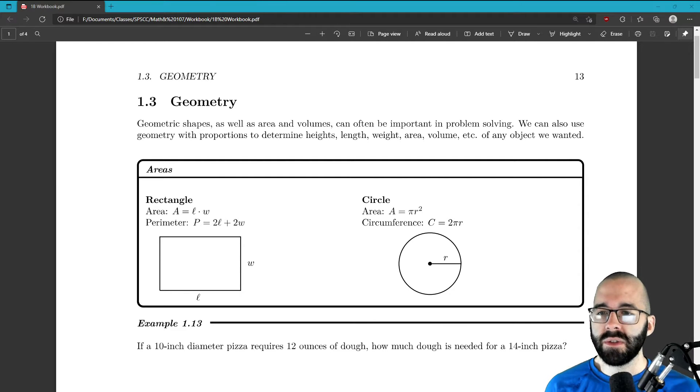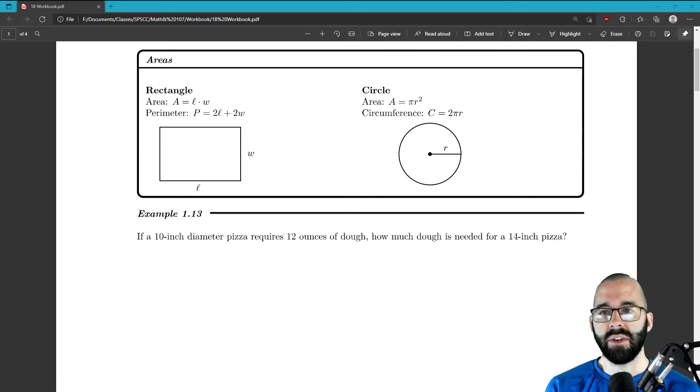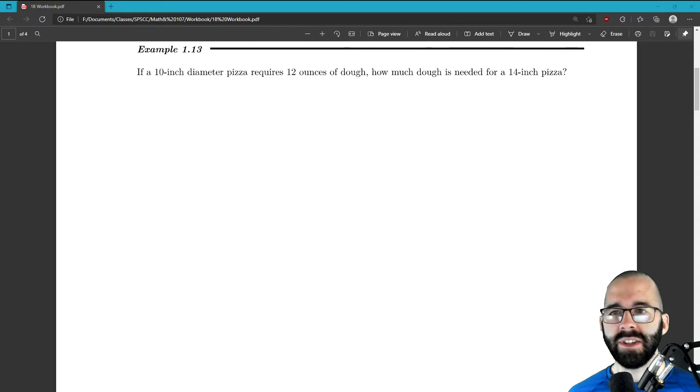So we've already covered rectangles and circles, how to find their areas and their perimeters. We call it a circumference for a circle. But you've already done this because we are in chapter one after having done chapter six. Okay, so we're just going to do this problem in this video.